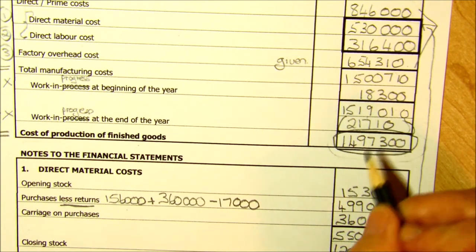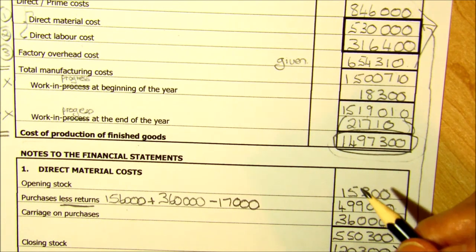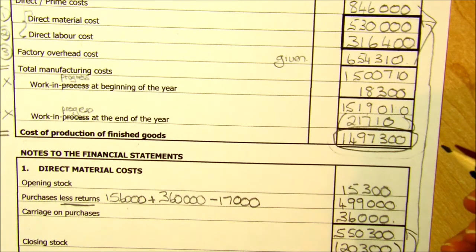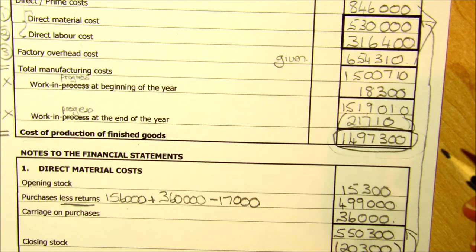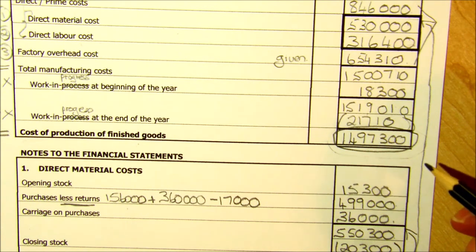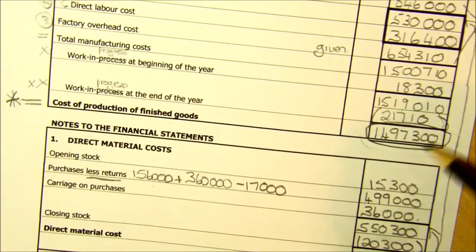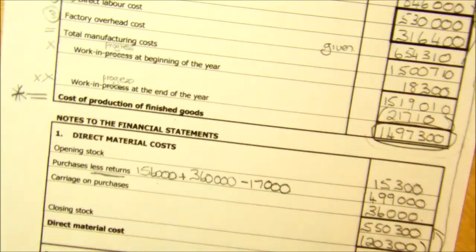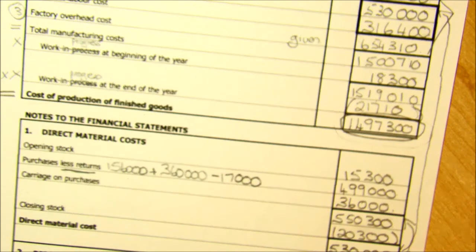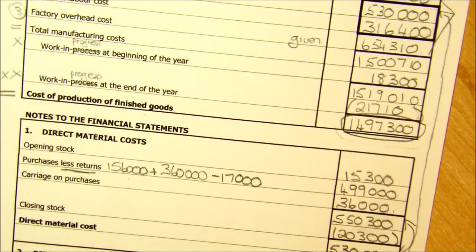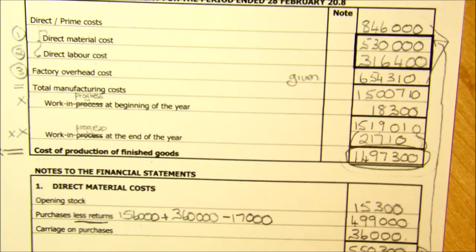Quite a few times in this exercise we've had to work back and find missing figures — it is a skill you need for the exam. While I'm doing it in connection with the production cost statement here, you must remember it in the context of any section where you fill in the figures you've got and find the missing figures. That just leaves us with the abridged income statement, which I will do in the next video.